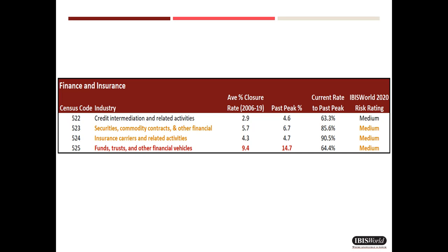Funds and trusts have very high historical closing rates, so be alert should you have exposures here. IBISWorld's five-digit industry risk ratings single out securities and commodity contracts, commodity dealing and brokerage, venture capital firms, as well as portfolio managers. Many insurance carriers are under stress, particularly those involved with life and healthcare insurance, and the insurer of insurers — reinsurance companies.